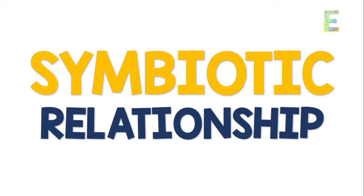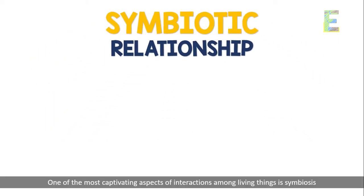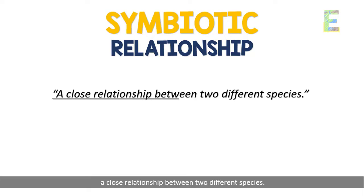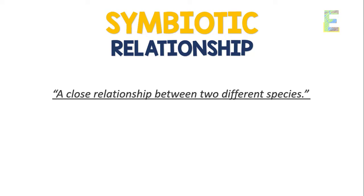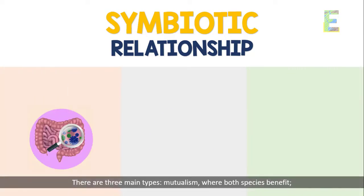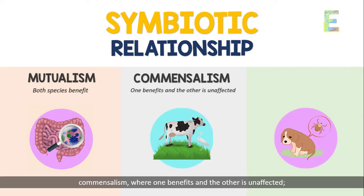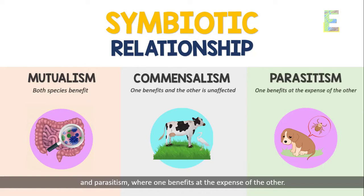Symbiotic relationships. One of the most captivating aspects of interactions among living things is symbiosis, a close relationship between two different species. There are three main types: mutualism, where both species benefit; commensalism, where one benefits and the other is unaffected; and parasitism, where one benefits at the expense of the other.